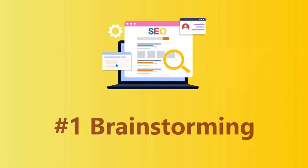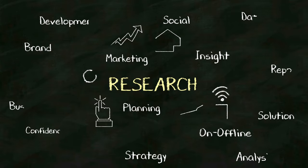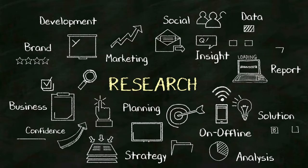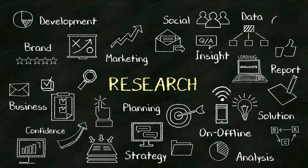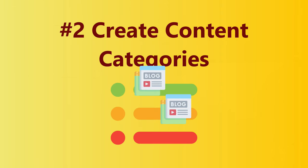Step one: we want to brainstorm all of the different blog post ideas that we have. Write them all down on a page. Don't think about whether they're good or bad at this stage, just write them all down. The next thing we need to do with our blog post ideas is start creating categories and putting them into the relevant categories.